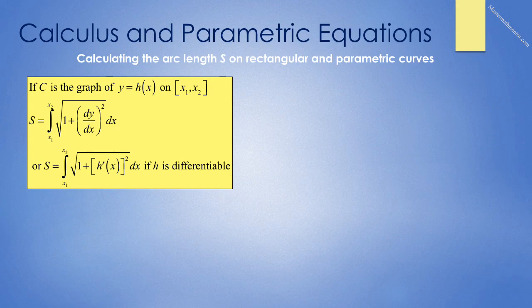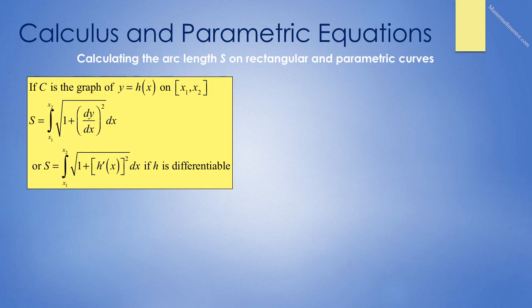Back in an earlier video, we calculated arc length on rectangular curves. The arc length s for y equals h(x) from x1 to x2 is the definite integral from x1 to x2 of sqrt(1 plus (dy/dx)²) dx, or equivalently the integral of sqrt(1 plus [h'(x)]²) dx. This only works if h is differentiable on all values between x1 and x2.